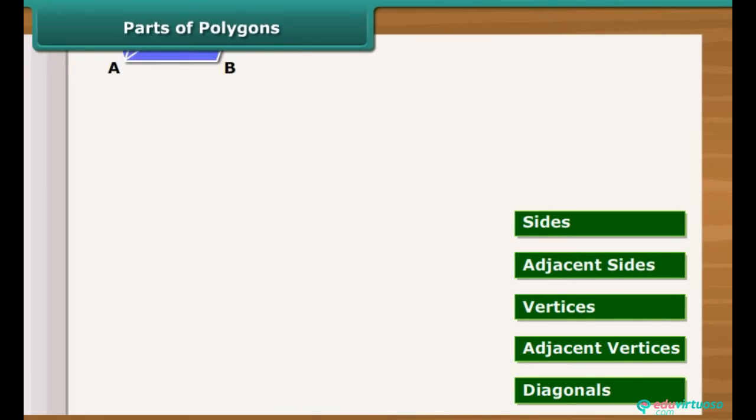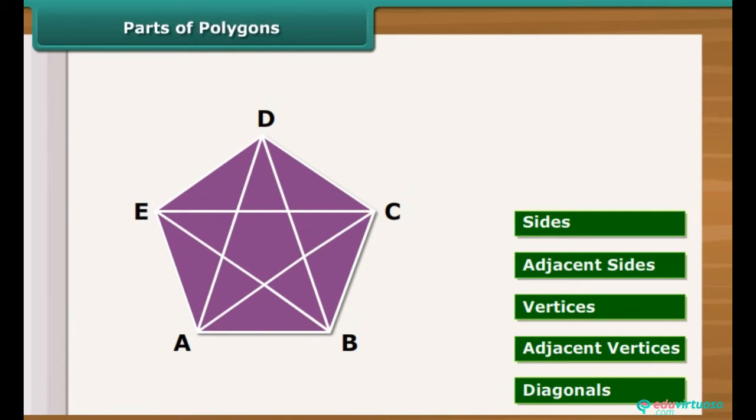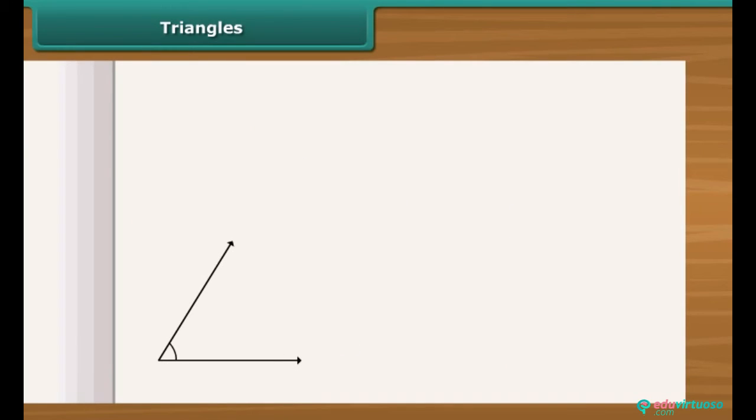Line segments joining non-adjacent vertices are called diagonals of the polygon. For example, AC, AD, BD, BE, CE are diagonals of the given polygon.